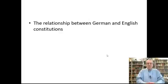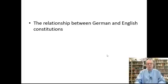The first thing to understand about the deep background of American constitutional law and American constitutional history are the earliest antecedents. As far as we know, that means the ancient Germans. English law is ultimately derived or at least descended from German law because the English as we know them first appear on the historic scene with the migration in the medieval period of the Angles and Saxons into what is now England — England, of course, named for one of those Germanic groups, the Angles.